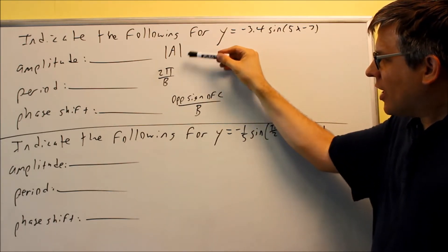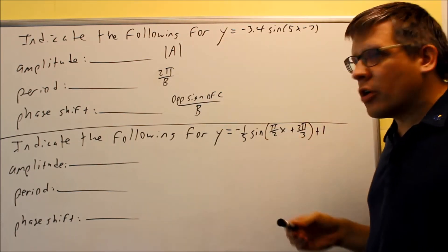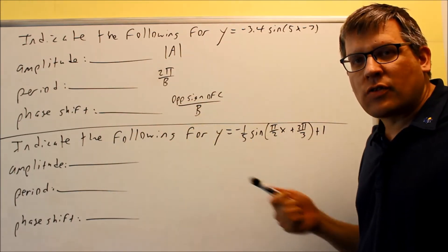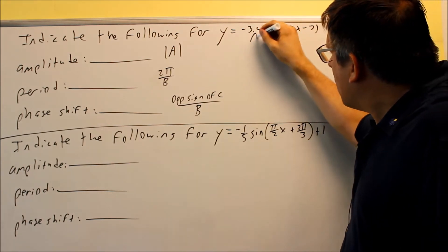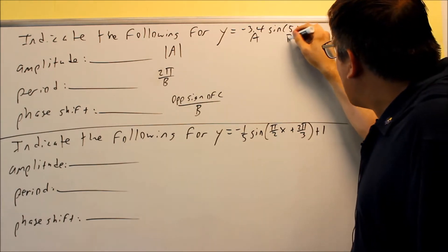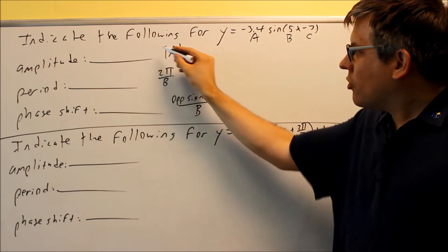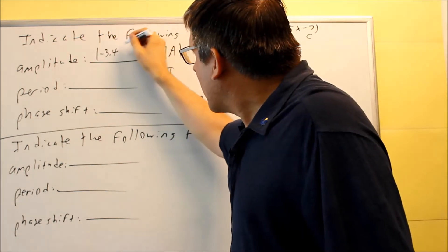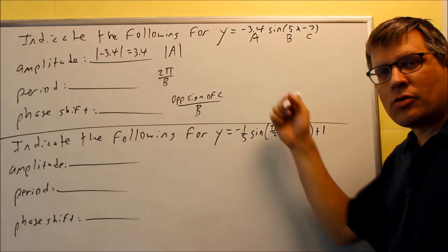These are just going to fill in the blanks only. We're not going to do any graphs just yet. So for this we need to identify what each of the numbers represent. The A would be negative 3.4. Your B is 5. And your C is going to be negative 7. When we do absolute value of A, that means we're going to do absolute value of negative 3.4, and that's going to be 3.4. So 3.4 is the amplitude for this one.